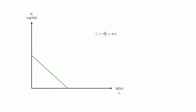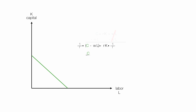I'm going to solve this equation in terms of K, which is the same as solving it for Y. I subtract WL from both sides of the equation — that cancels out. So I have C minus W times L is equal to RK. Now I want to get rid of R, so I multiply both sides by 1 over R. On the left-hand side I have C divided by R minus WL divided by R, and this equals K. This is the equation for that line.